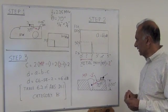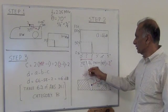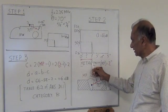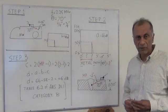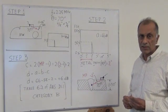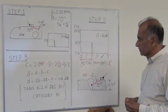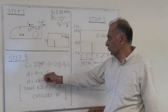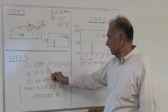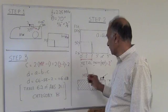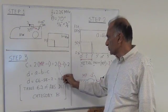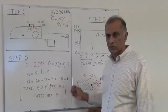Now when we find the indication, we also measure the metal path to calculate the attenuation factor, which is C. The attenuation factor C is given by 2 times metal path minus 1. So let's assume the metal path is 2 inches, so 2 times 2 minus 1 equals 2.